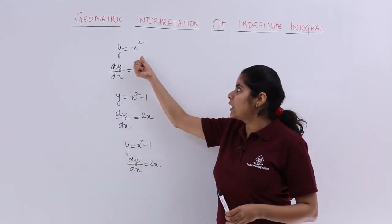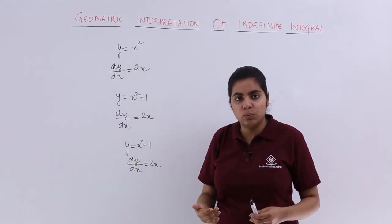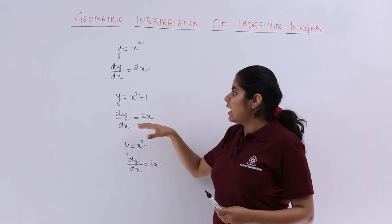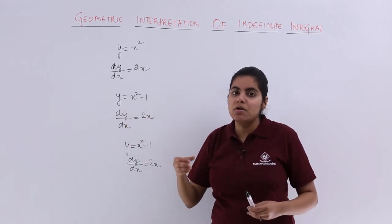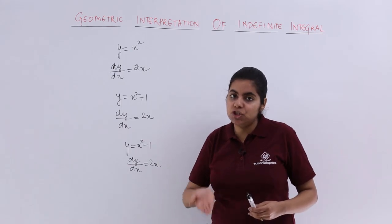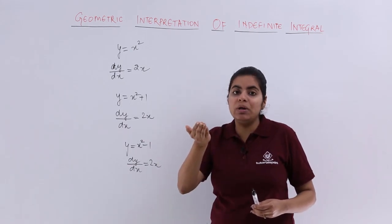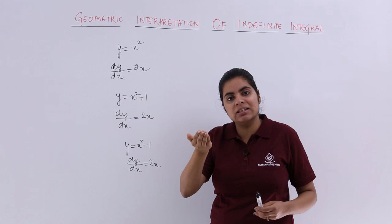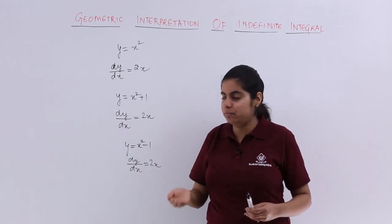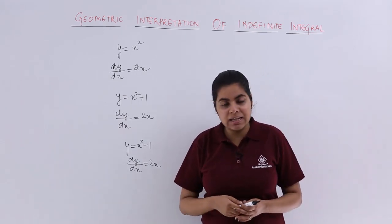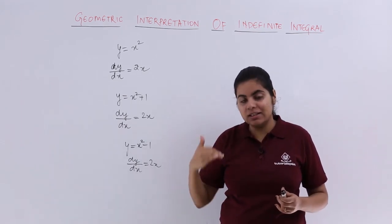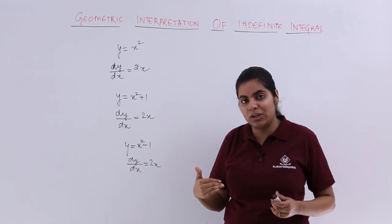I have y equals x square means the graph would be a parabola with the vertex at origin. If I have y equals x square plus 1, the graph would be a parabola shifted 1 unit above on the y axis. Next, y equals x square minus 1. What does it mean? It means the parabola is stepping downwards one unit.